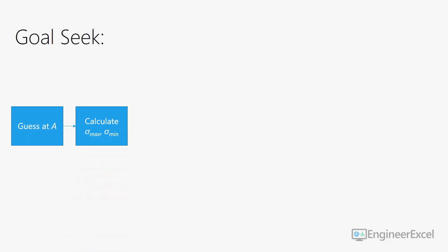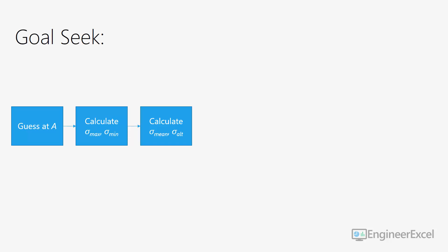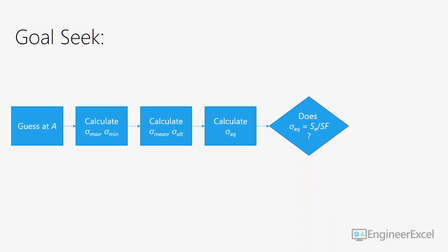Here's a flowchart of how we're going to use Goal Seek to solve this system of equations. First, we take a guess at the total area of the bolts holding the lid on the pressure vessel. We use that guess to calculate sigma max and sigma min — the max and min stresses in the bolts. From there we calculate the mean and alternating stress, then the equivalent stress. We check whether the equivalent stress equals endurance strength divided by the safety factor. If not, Goal Seek goes back and keeps guessing at the area until they're equal — and all of this happens automatically within Excel.